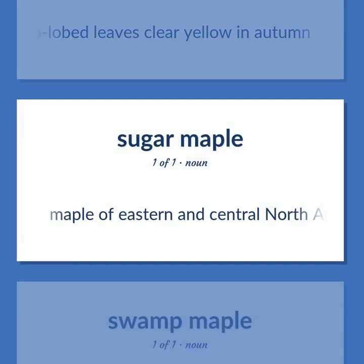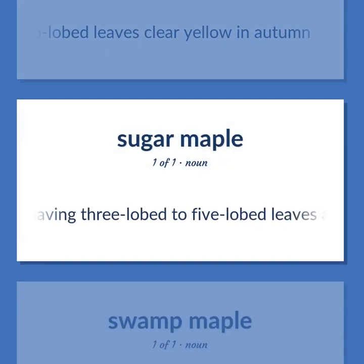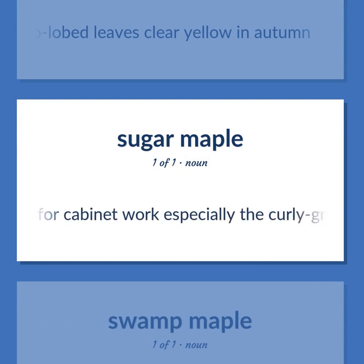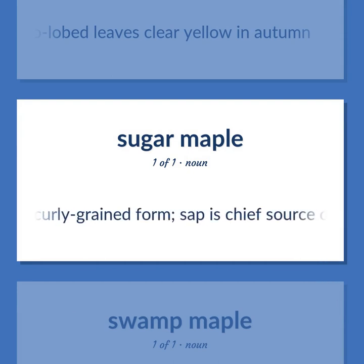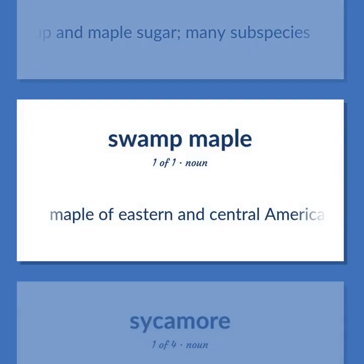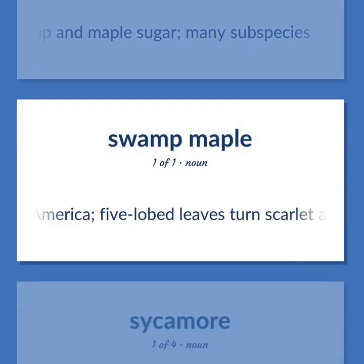Maple of eastern and central North America having three-lobed to five-lobed leaves and hard close-grained wood much used for cabinet work, especially the curly-grained form; sap is chief source of maple syrup and maple sugar, many subspecies. Maple of eastern and central America, five-lobed leaves turn scarlet and yellow in autumn.